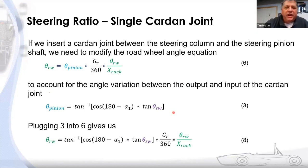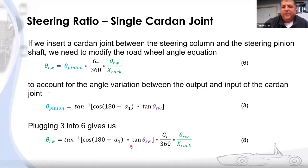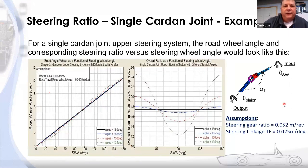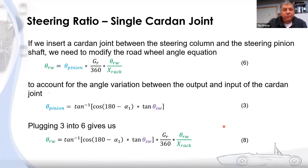We take the equation we developed where the pinion angle is a function of the steering wheel angle and the spatial angle of the joint, and plug it into the road wheel angle equation. Now we have Equation 8: road wheel angle as a function of the steering wheel angle and the non-uniformity of that cardan joint. All of this you can do in Excel — you can take these equations, plug them in, and generate the curves we've shown. I happen to have simulation data from an Adams model as well.